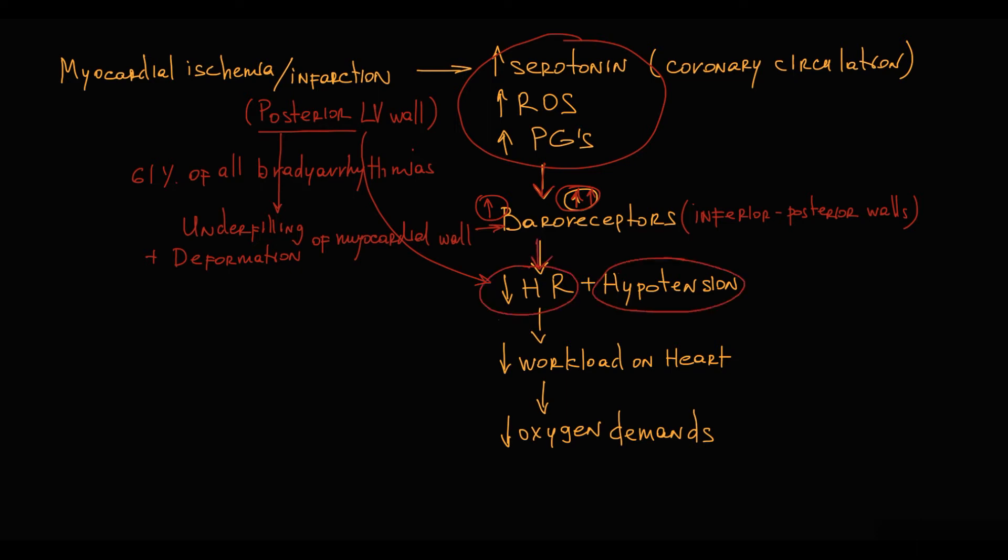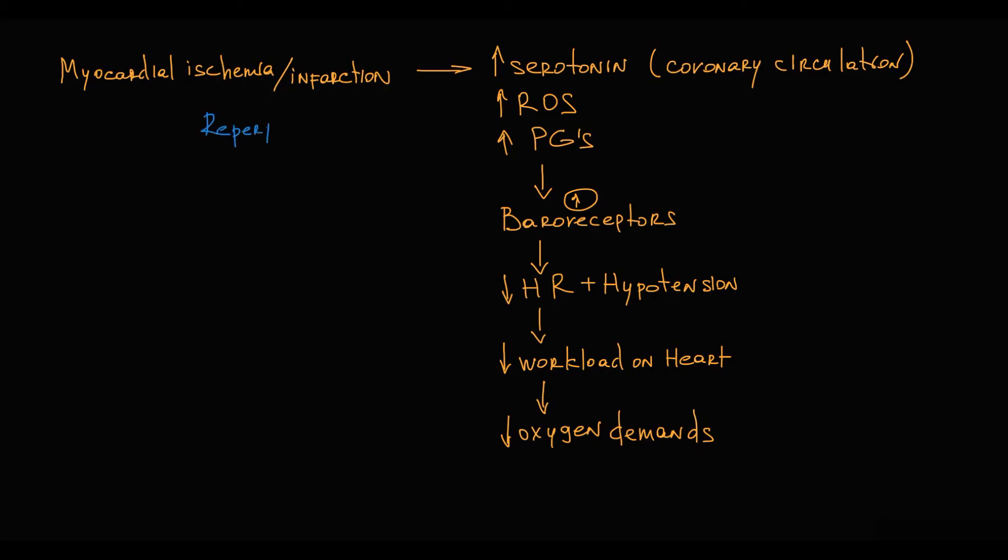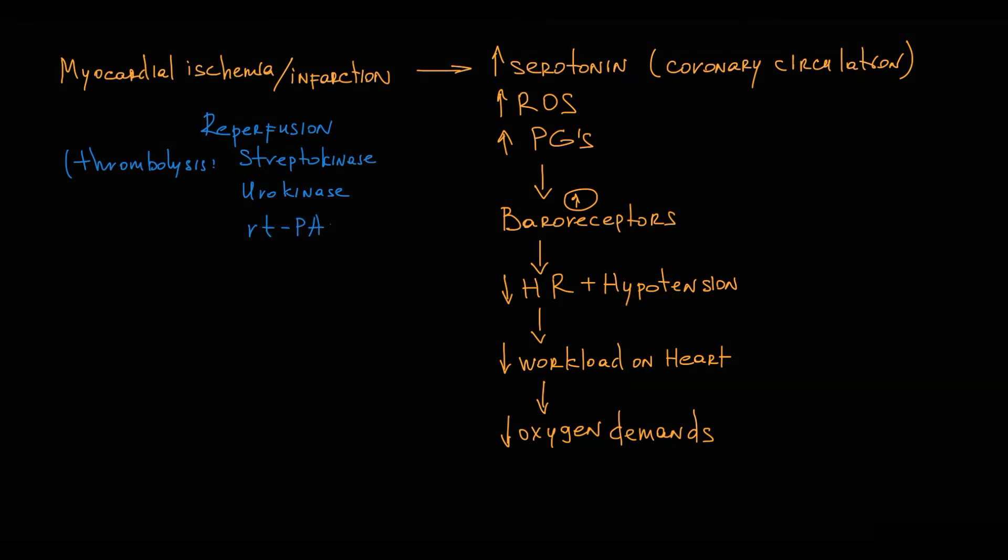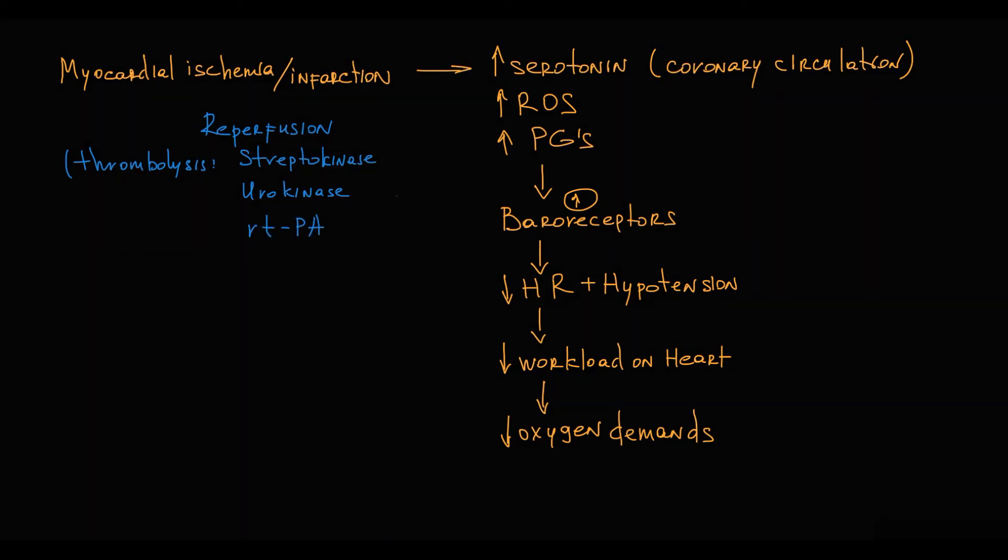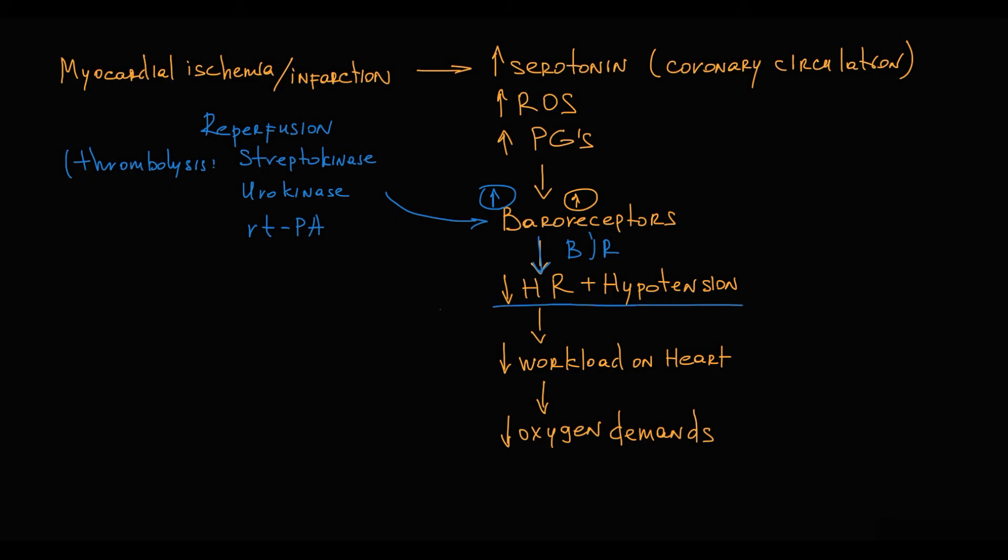Also, this reflex is strongly associated with reperfusion. Because medications that are used for IV thrombolysis, for example streptokinase, urokinase or recombinant tissue plasminogen activator are one of those chemical substances that can stimulate baroreceptors and provoke Bezold-Jarisch reflex. That results in transient bradycardia and hypotension, particularly in case of acute myocardial infarction of the inferior wall.